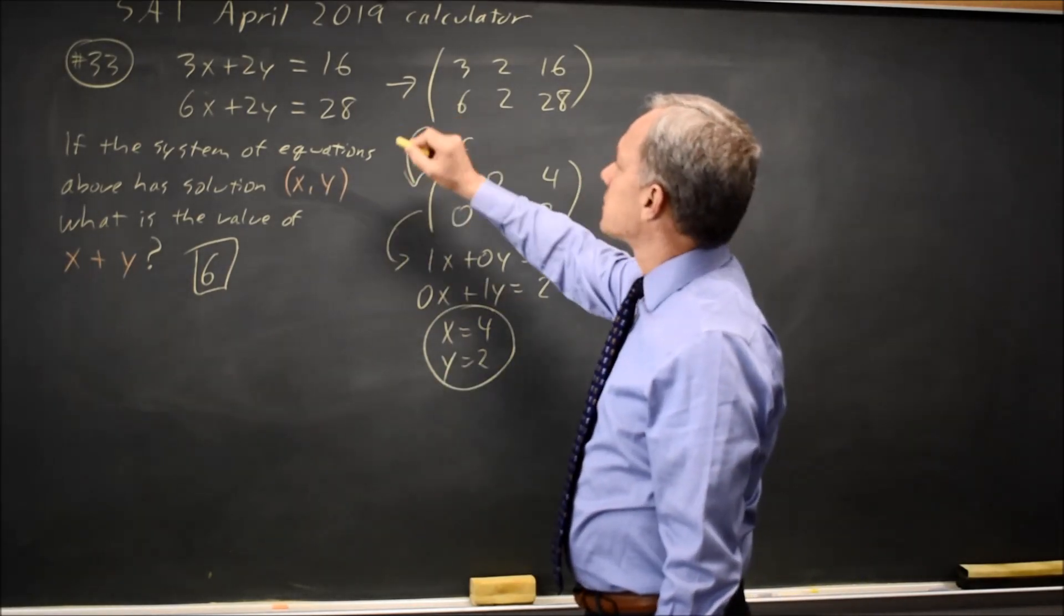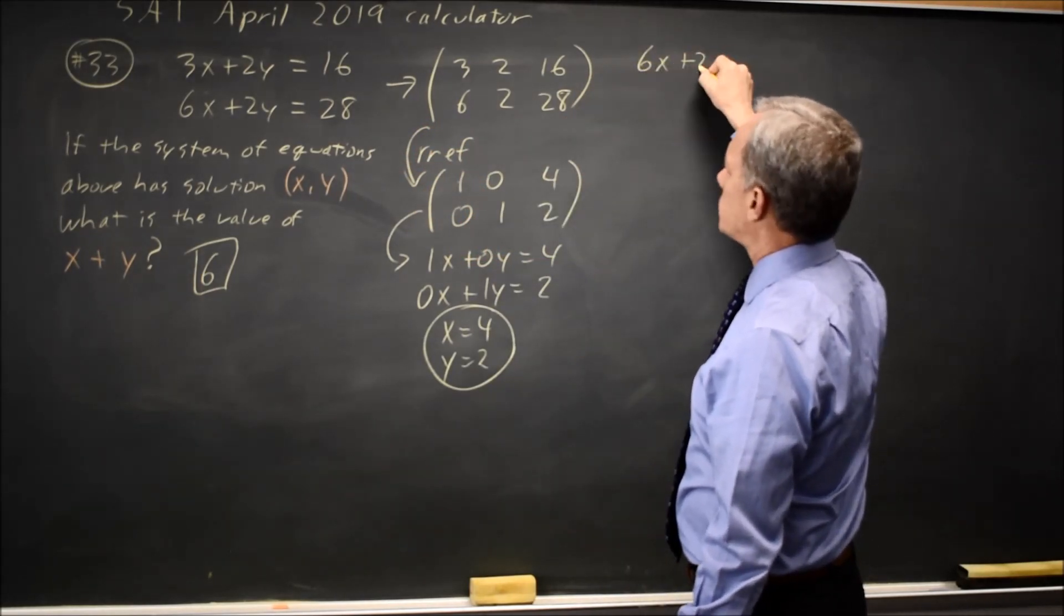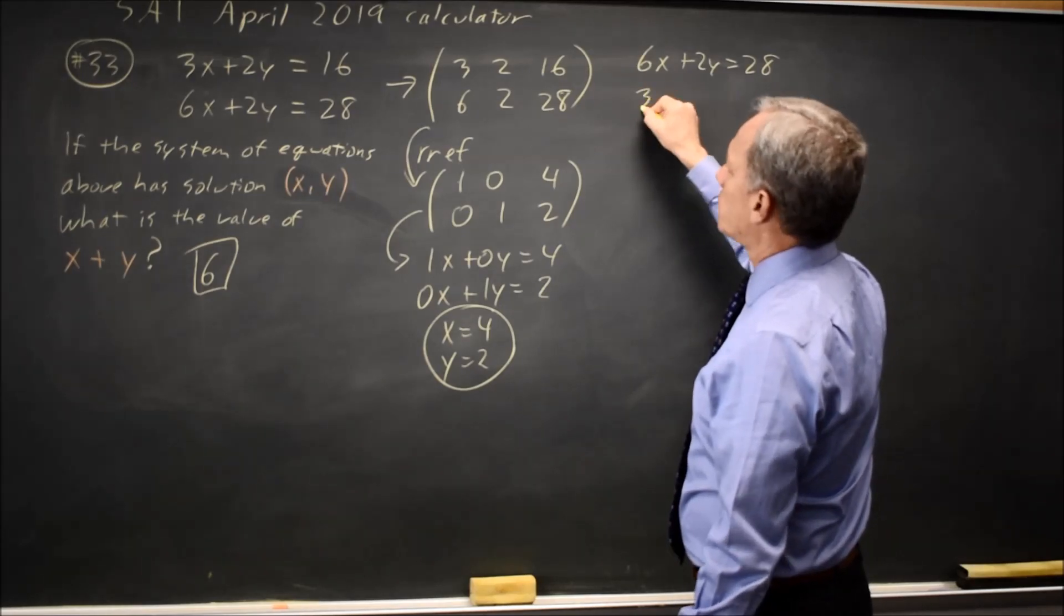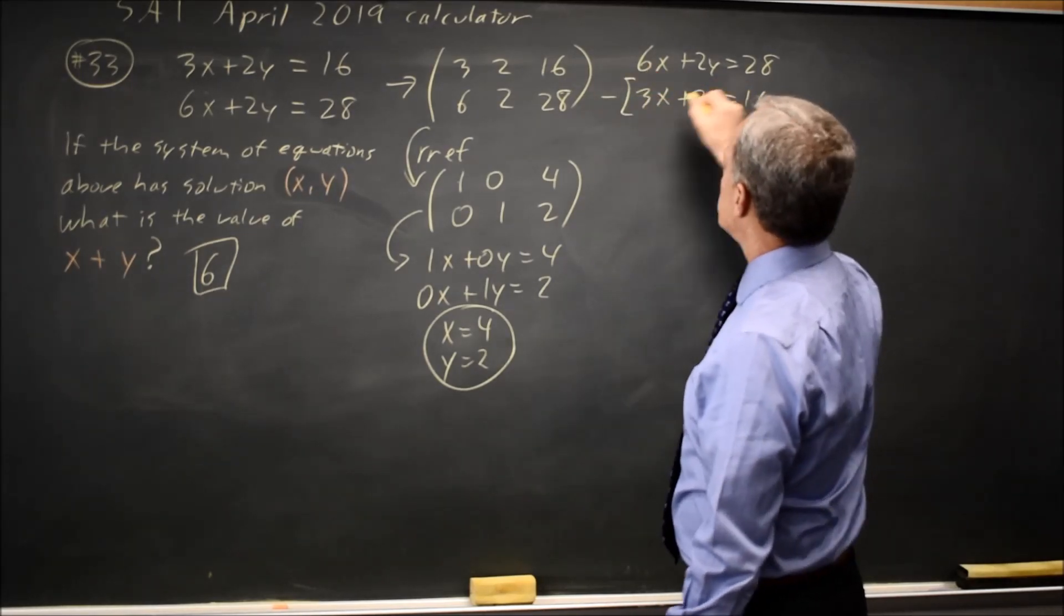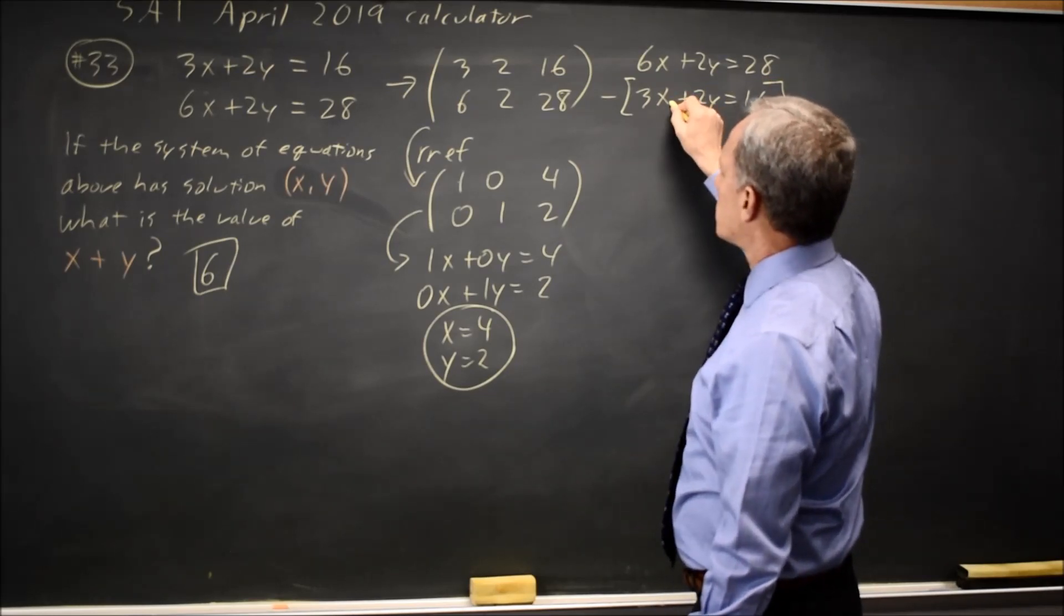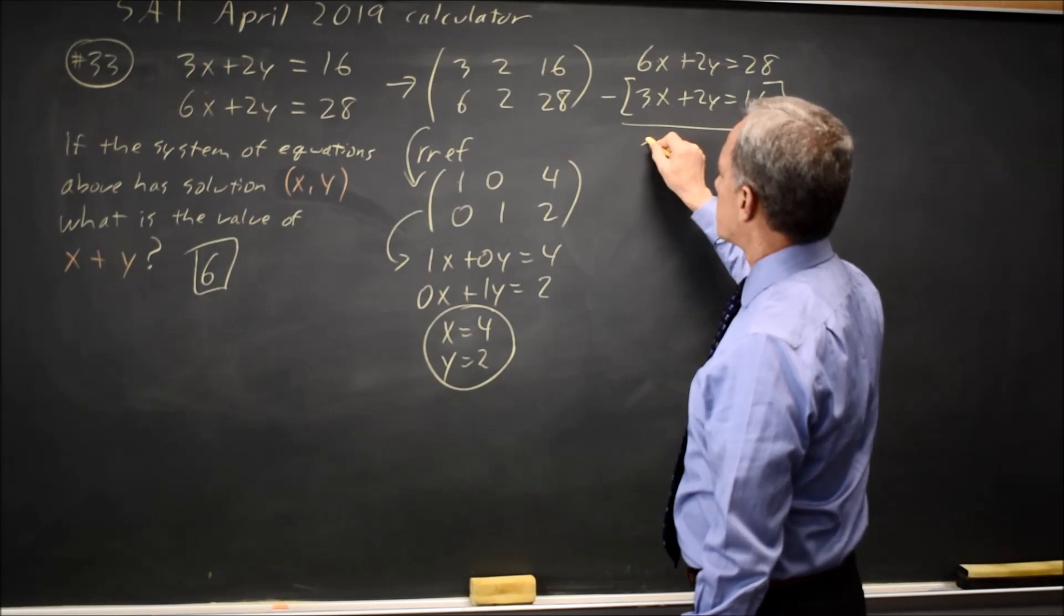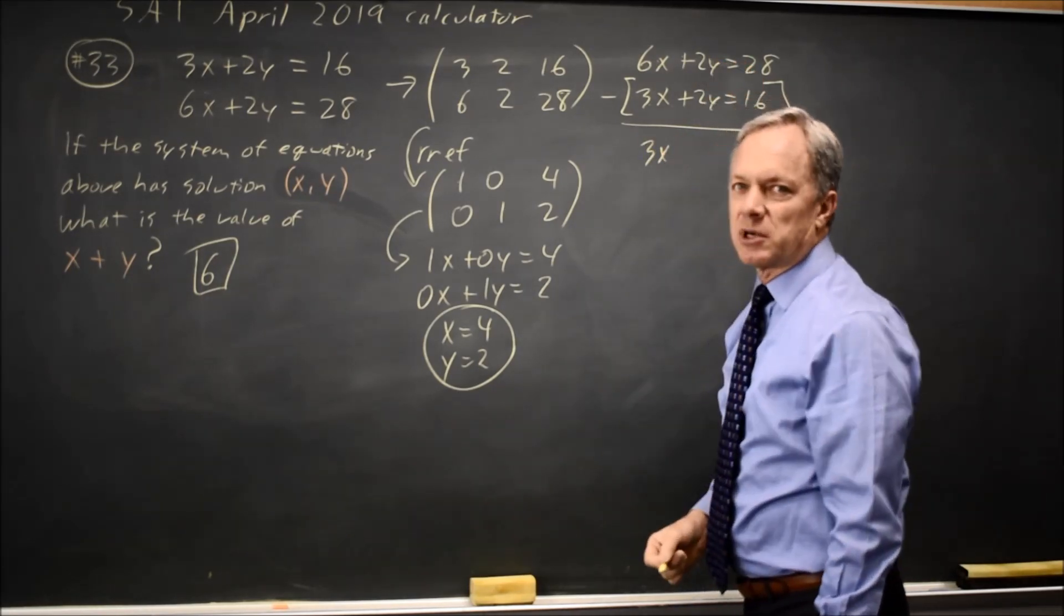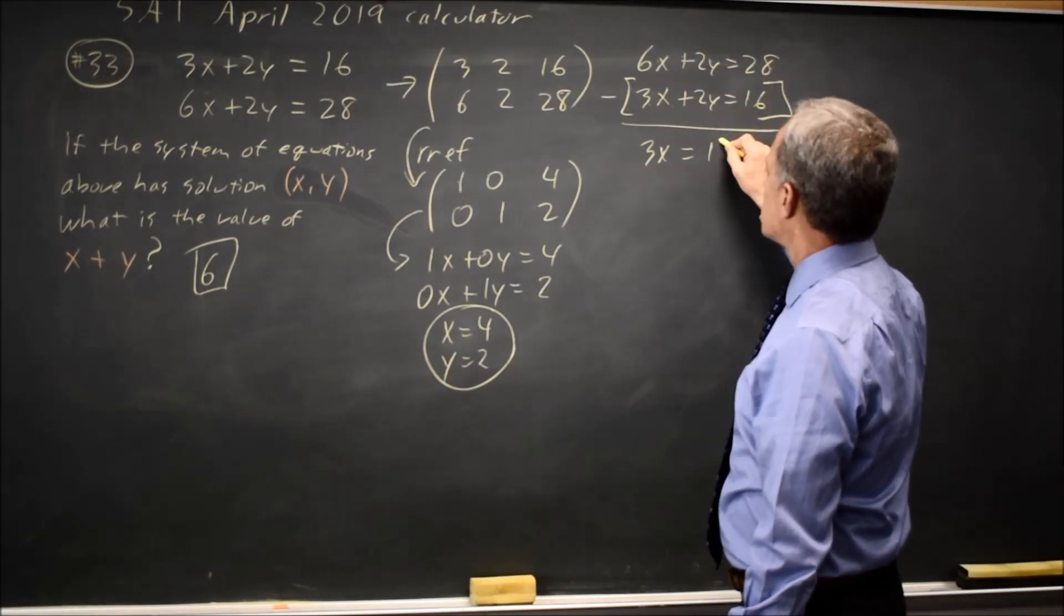This particular system is also pretty quick by hand. 6x plus 2y equals 28, 3x plus 2y equals 16. We see that if we subtract the second equation from the first one as I've written them, 6x minus 3x is 3x, 2y minus 2y equals 0y. That's why I just subtract. And 28 minus 16 is 12.